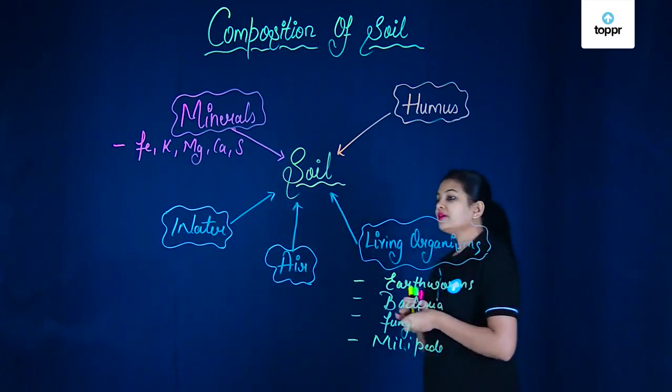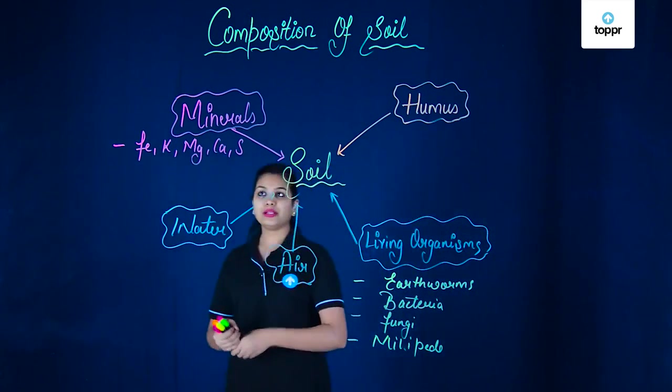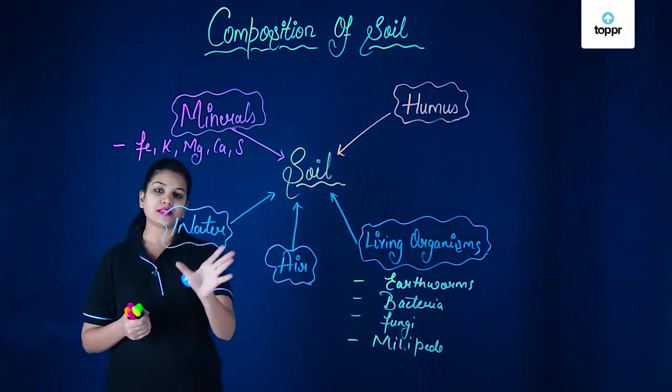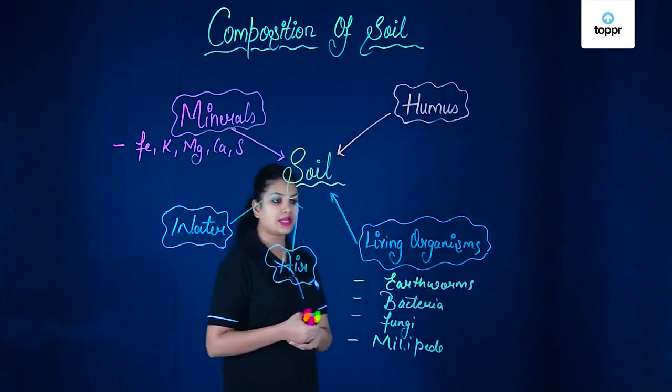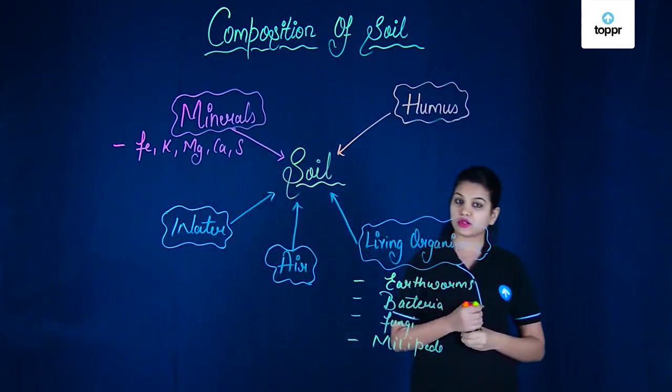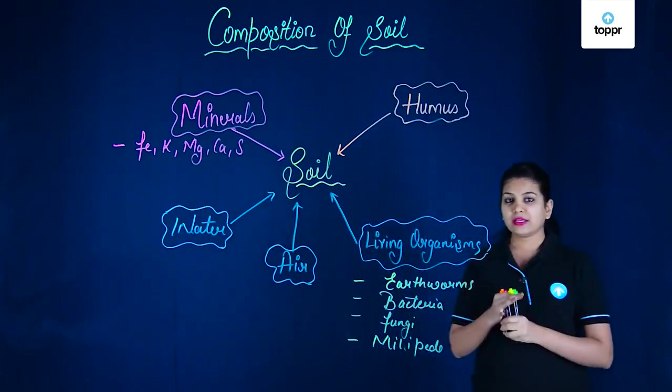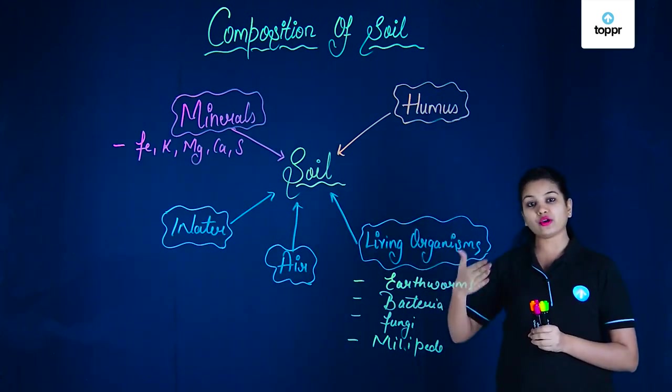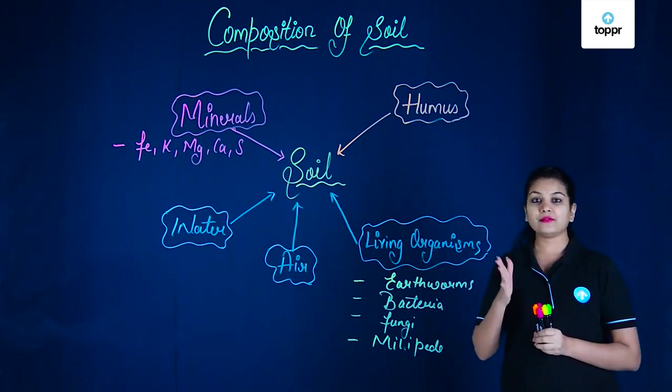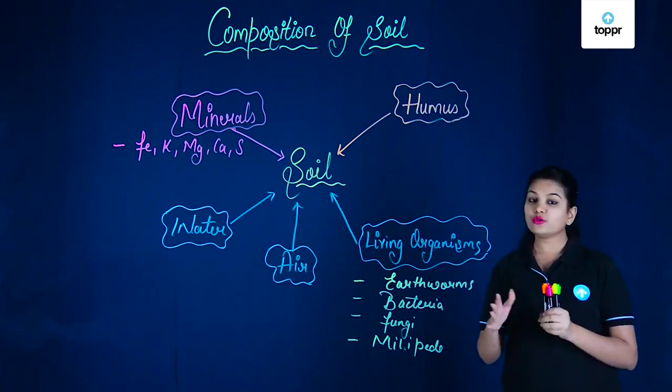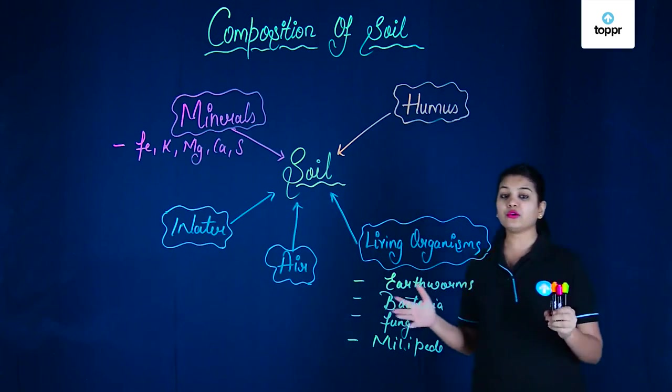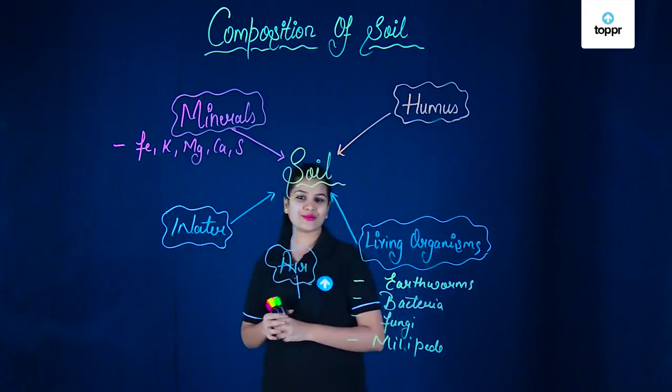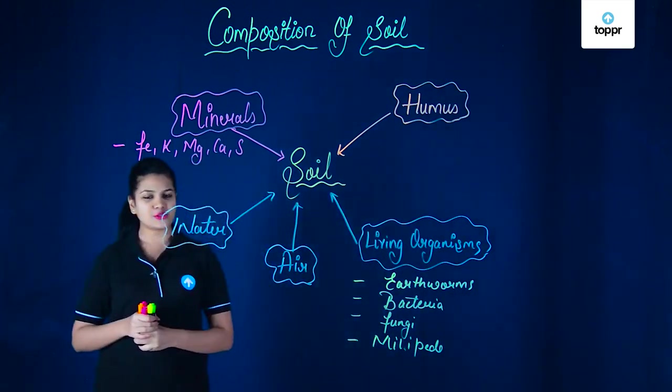So here we see that the main constituents of soil, they are minerals and humus. Besides these two, there is water, air and living organisms also found in the soil. They say that the number of living organisms found above the soil are lesser than the found below the soil. So you can imagine that how many number of living organisms are present inside there. So this was about the composition of soil.